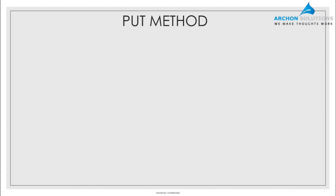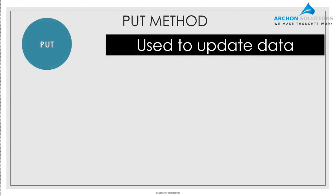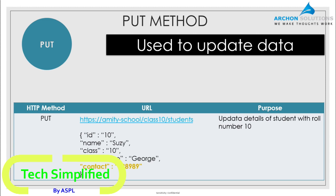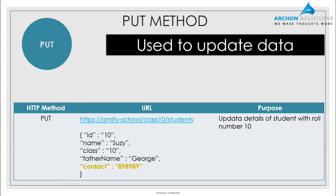The third method is called PUT. The PUT method is usually used to update an existing record. In practical use, people interchangeably use PUT or POST for updating data because the net effect is the same. When using PUT, there is no difference in the URL — we use https://amityschool/class10/students — but in this case we send a body for a student named Susie, and since it is an update request we also know the student's ID, which can be the roll number.